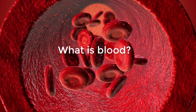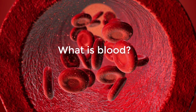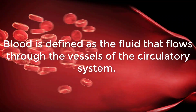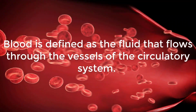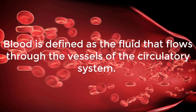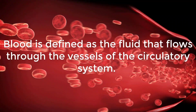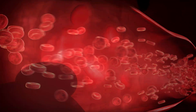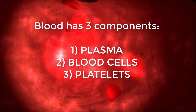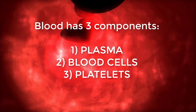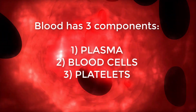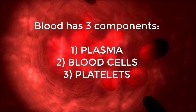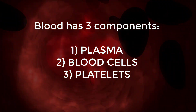What is blood, with scientist Cindy? Blood is defined as the fluid that flows through the vessels of the circulatory system. Blood has three components: plasma, blood cells, and platelets.